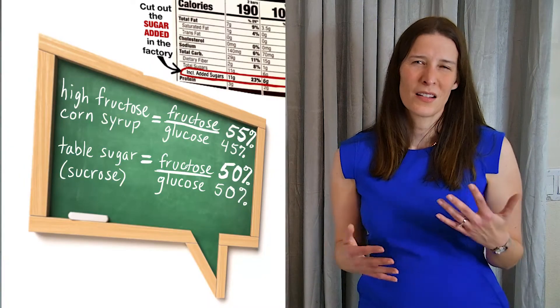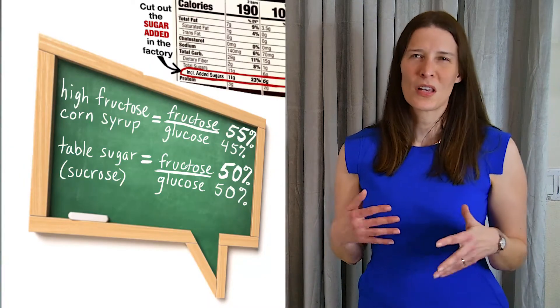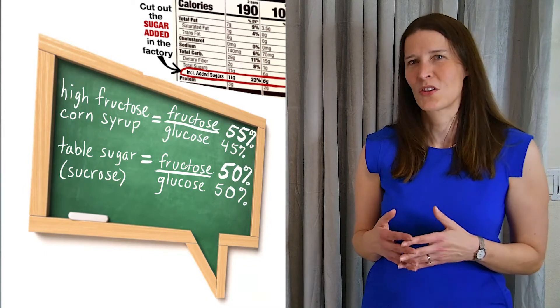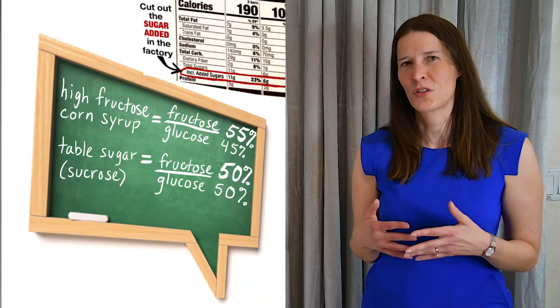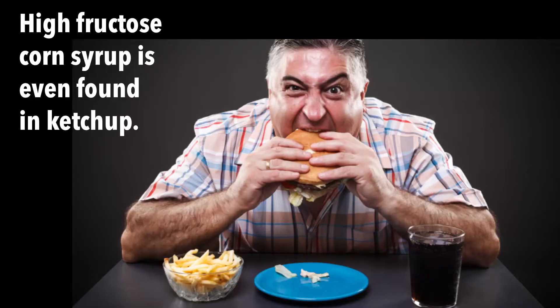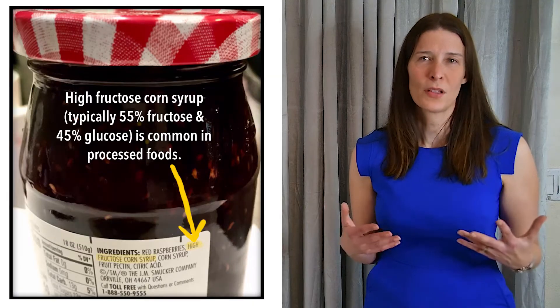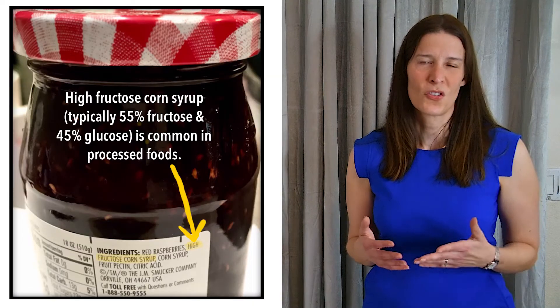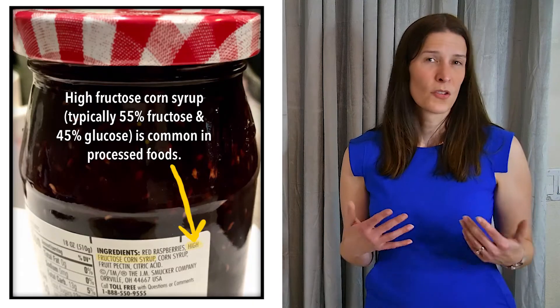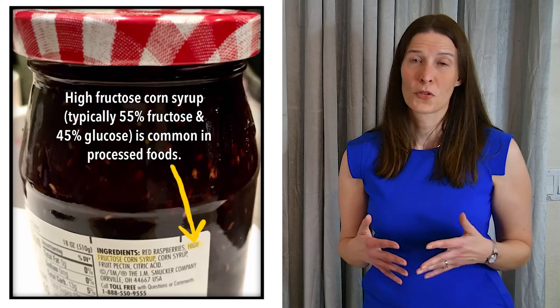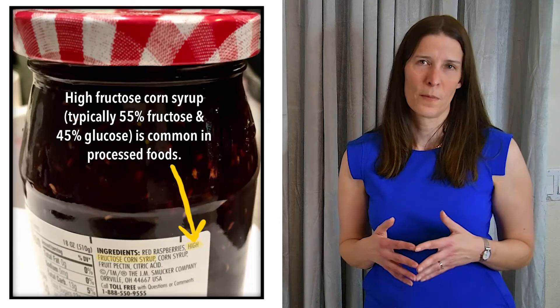Fructose does not induce the same satiety signals as other carbohydrates such as glucose, so it is easier to eat more of it without feeling full. Fructose is commonly found in sweeteners such as sucrose and high fructose corn syrup.